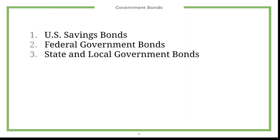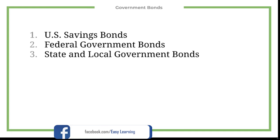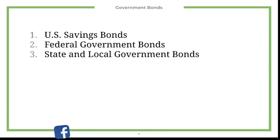There are multiple different classes of bonds. The first one is called government bonds, and these can be broken up into three subcategories: U.S. savings bonds, federal government bonds, and state and local government bonds.